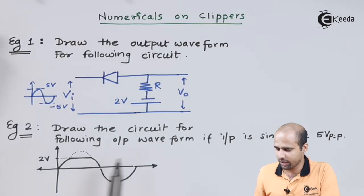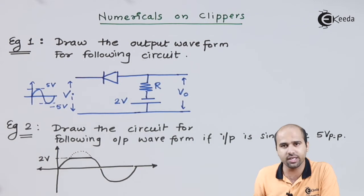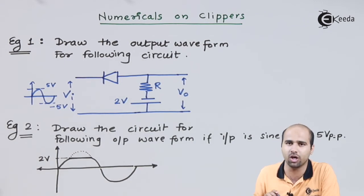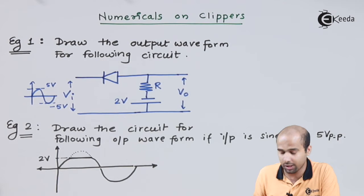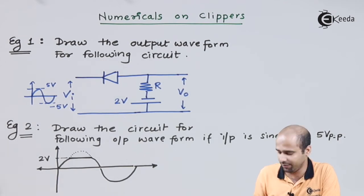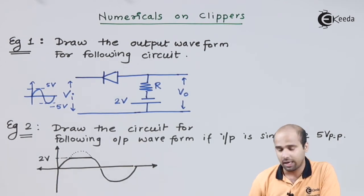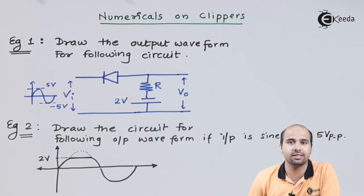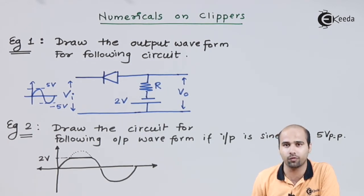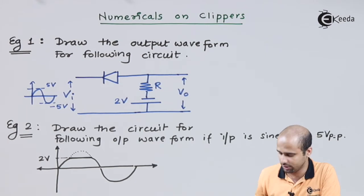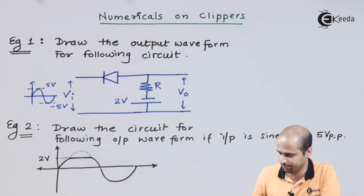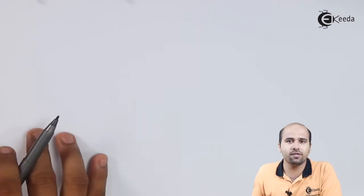The first numerical is straightforward: a circuit is given and they ask us to draw the waveform of the output signal. The second numerical is in reverse — they give us the output signal and we have to find out which circuit produces that given waveform. Let us solve the first numerical.